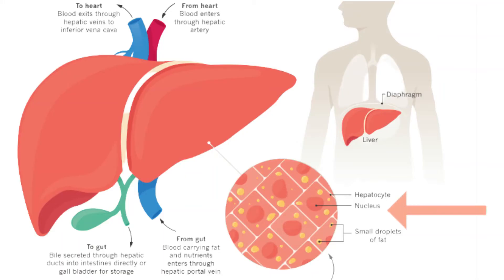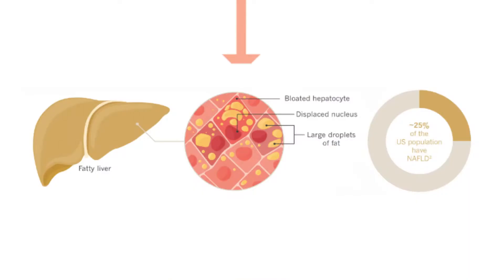A healthy liver cell contains a nucleus at its center and evenly distributed fat droplets. A healthy liver is dark red in color and silky to the touch. When fat droplets start to accumulate in the liver cells, it's called fatty liver disease.